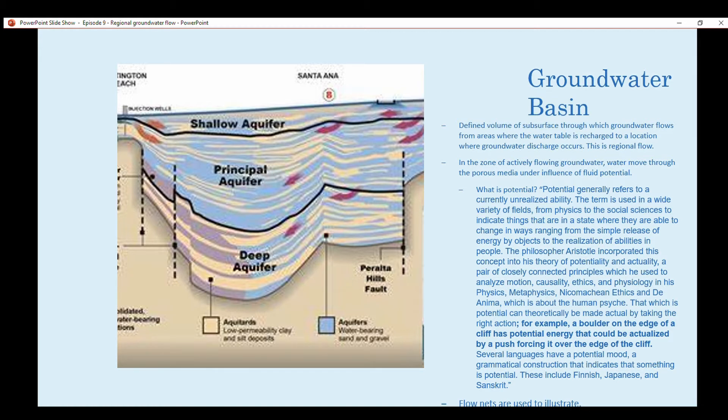This is called regional flow. In the zone of actively flowing groundwater, the water moves through the porous media under the influence of fluid potential. The potential refers to unrealized ability. A good example: a boulder on the edge of a cliff has potential energy that could be actualized by pushing it off the cliff, and at that point it's not potential energy anymore, it's mechanical energy.